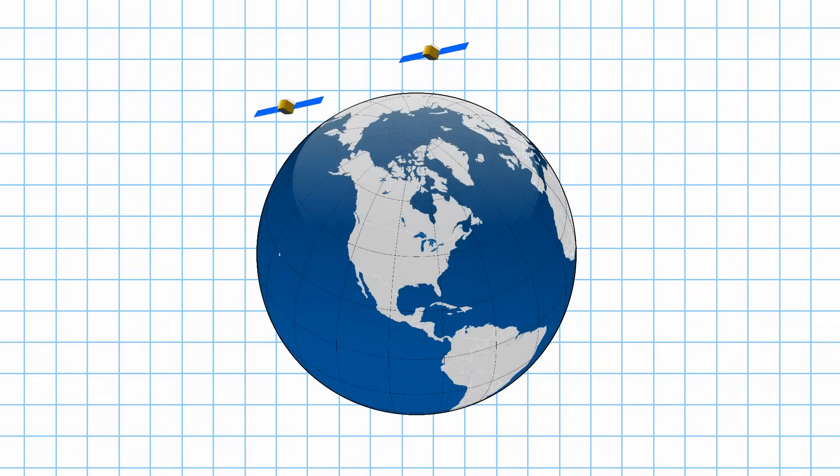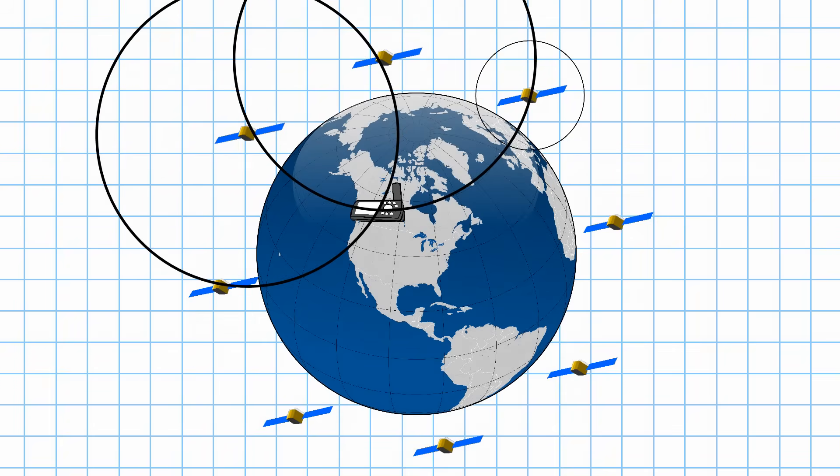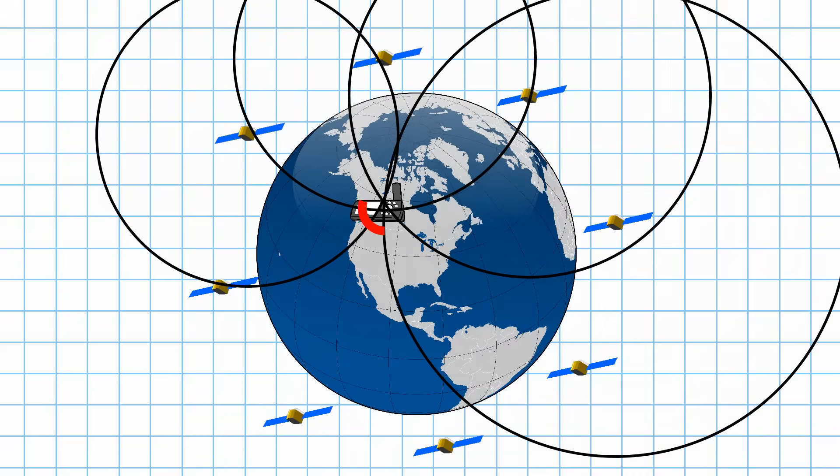In its most basic form, GPS triangulates your position by measuring how far away it is from different satellites. It knows the position of each satellite, and by drawing an imaginary ring around each one, it can calculate its position as the point where all the rings intersect. It sounds simple enough, but in this video, we're going to explore exactly how it measures that distance, and what sort of errors can creep in throughout the process.